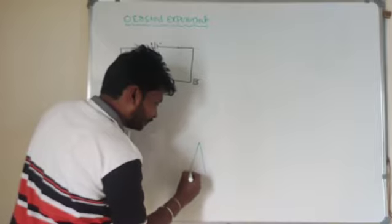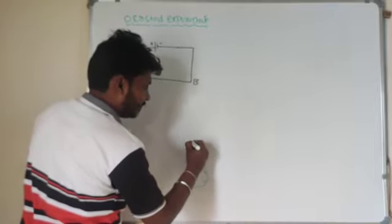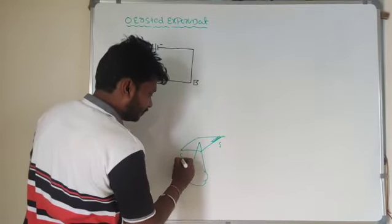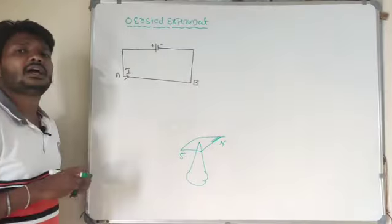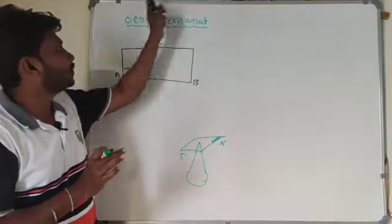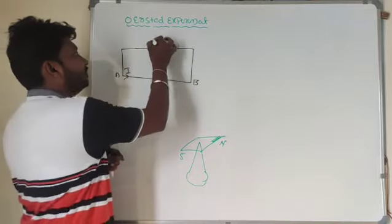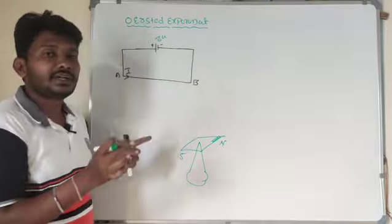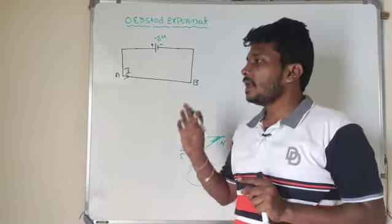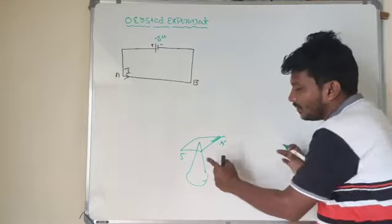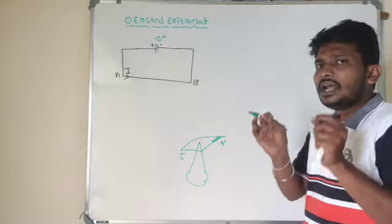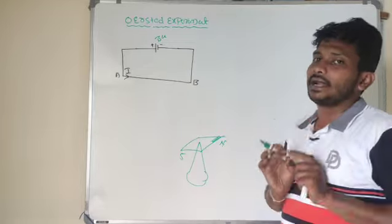This is the magnetic needle consisting of a south pole and a north pole. I will place this magnetic needle near the wire. In the Oersted experiment, I consider one battery giving connection to conducting wire AB, with current flowing from A to B. Nearby this circuit, I place one magnetic needle consisting of a north pole and a south pole. This needle will get deflected only in the presence of a magnetic field.